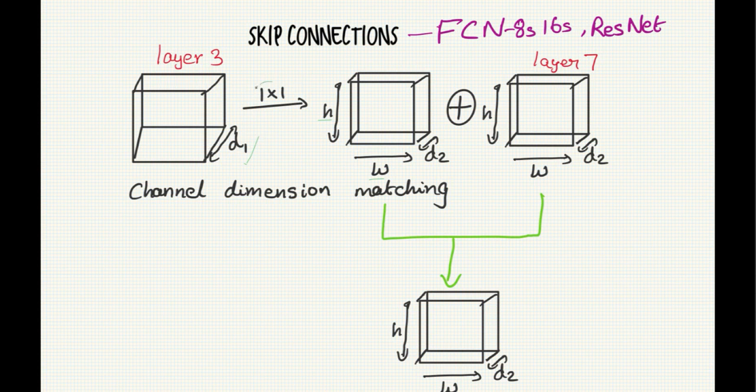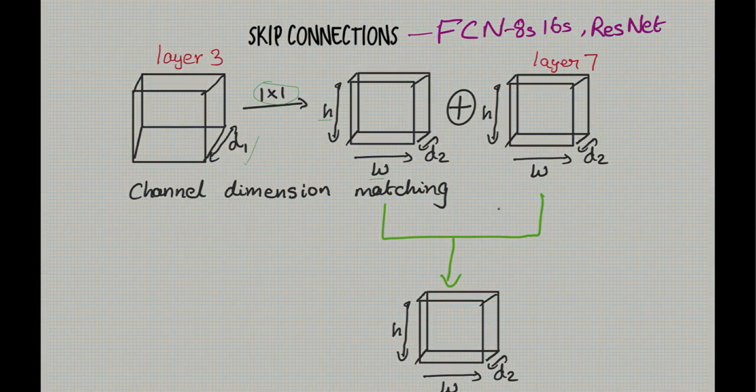In this example, the tensor from layer three is fused with the tensor from layer seven. So what happens is the tensor from layer three is first fed into a one by one convolution to match the number of dimensions in the z direction, and then these two layers are fused.